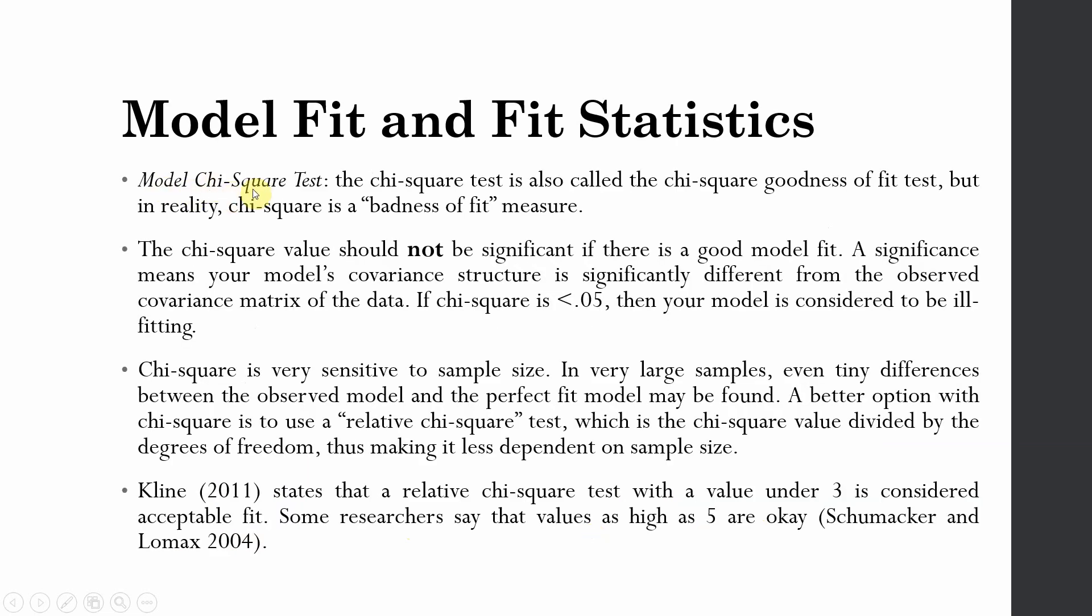One of the most important one is the model chi-square test. The chi-square test is also called the chi-square goodness of fit, but in reality, chi-square is a badness of fit measure. The chi-square value should not be significant if there is a good model fit. A significance means your model covariance structure is significantly different from the observed covariance matrix of the data. If chi-square is less than 0.05, then your model is considered to be ill-fitting.